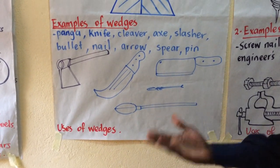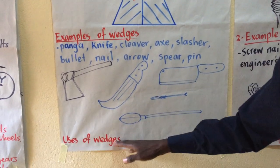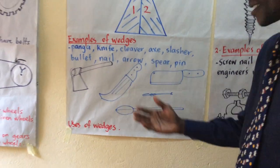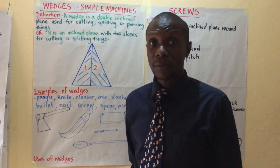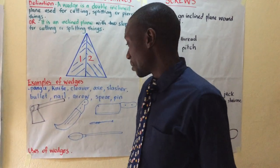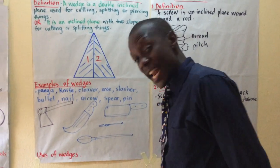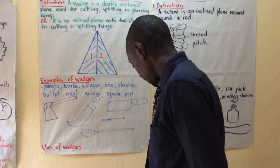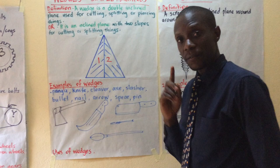Spears and arrows are used as weapons. Going to the uses of wedges — you single out one and give its importance. An axe is used for chopping firewood. A panga is used for cutting small trees. A cleaver is used for cutting meat. A knife is used for peeling food. Those are the uses of wedges.